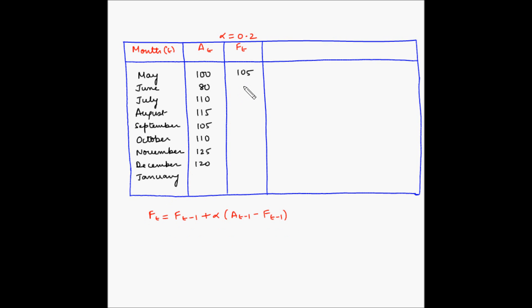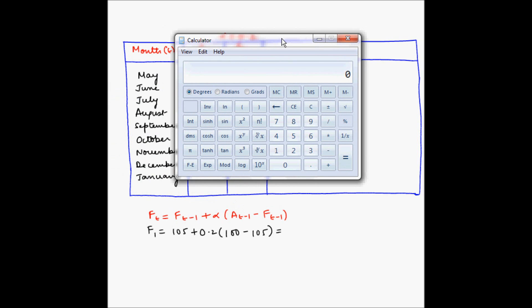To calculate the forecast for June, we need the forecast for May and the actuals for May along with the value of alpha. So the forecast for June equals the forecast for May which is 105, plus 0.2 times (actuals for May which is 100, minus forecast for May which is 105). That gives us 100 minus 105, multiplied by 0.2, plus 105, so the forecast is 104.